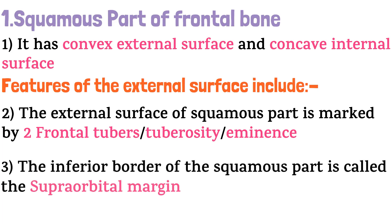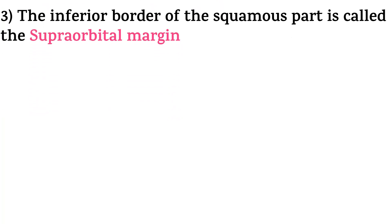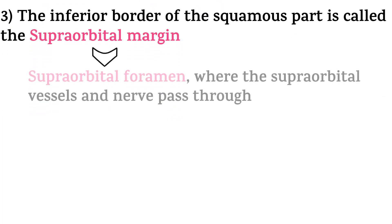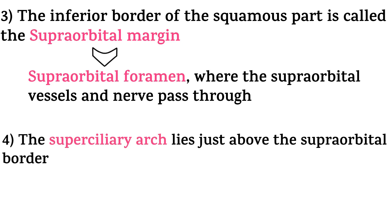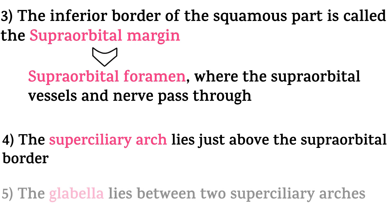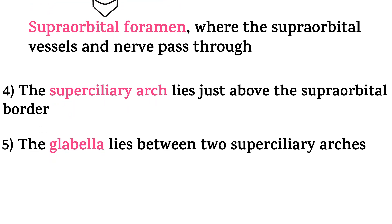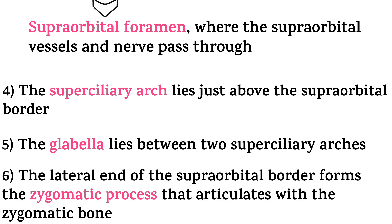The inferior border of the squamous part is called the supraorbital margin. This area contains the supraorbital foramen, where the supraorbital vessels and nerves pass through. The supraciliary arc lies just above the supraorbital border. The globula lies between the two supraciliary arcs. And lastly, the lateral end of the supraorbital border forms the zygomatic process, which articulates with the zygomatic bone.